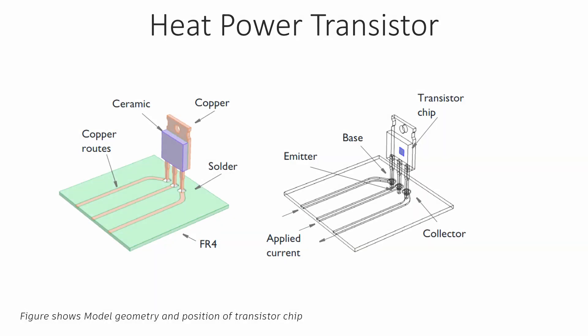Welcome back. In this example, we're going to simulate a system consisting of a small part of a circuit board containing a power transistor and the copper pathways connected to it. The reason we conduct this simulation is to estimate the operating temperature of the transistor, which can be substantially higher than room temperature due to undesired electric heating. Transistors are semiconductor devices used to switch or amplify electronic signals, and each system has its own acceptable operating temperature range.